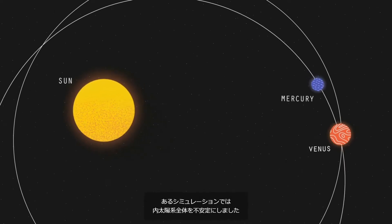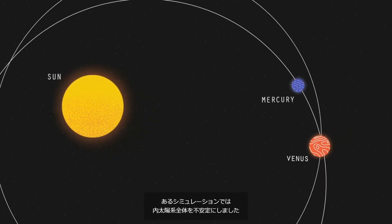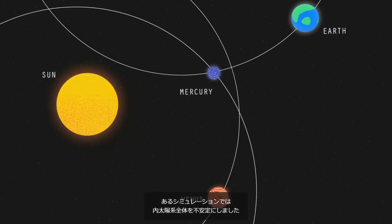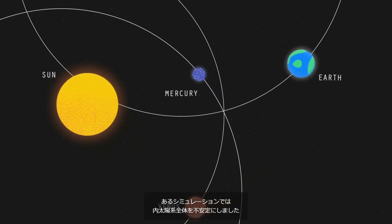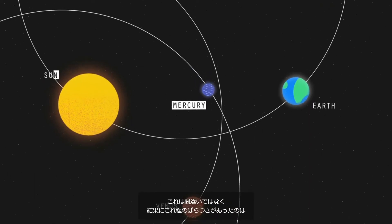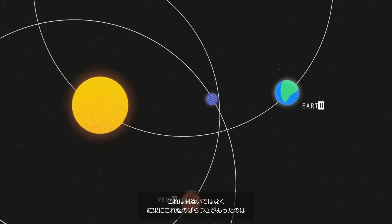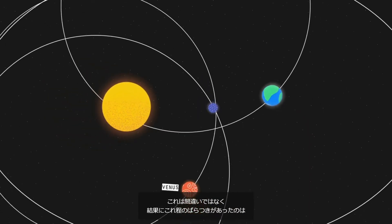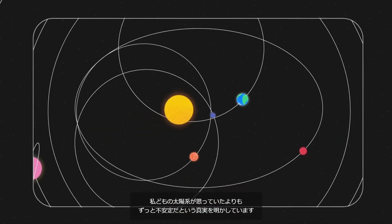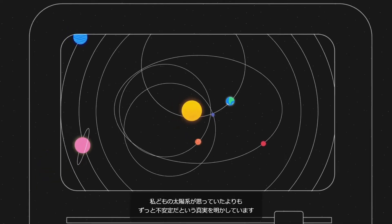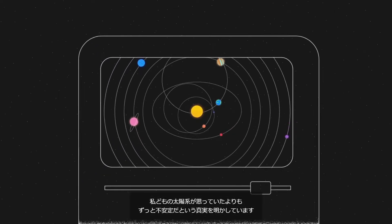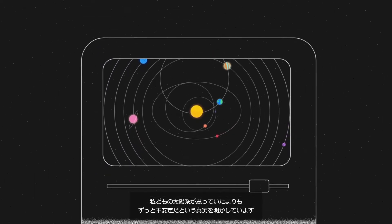Worse yet, in one simulation, it destabilized the entire inner solar system. This was no error. The astonishing variety in results reveals the truth that our solar system may be much less stable than it seems.